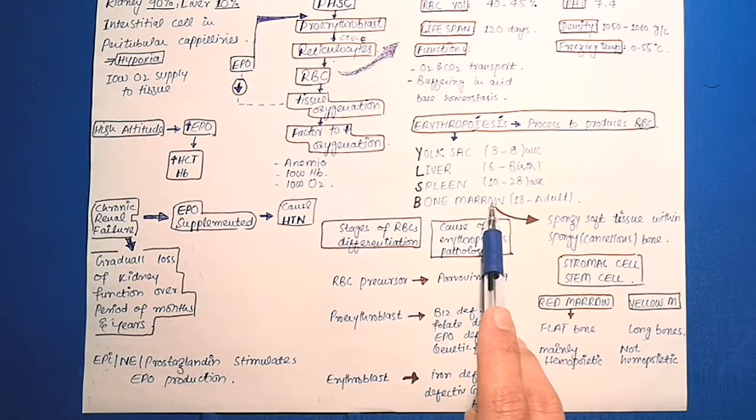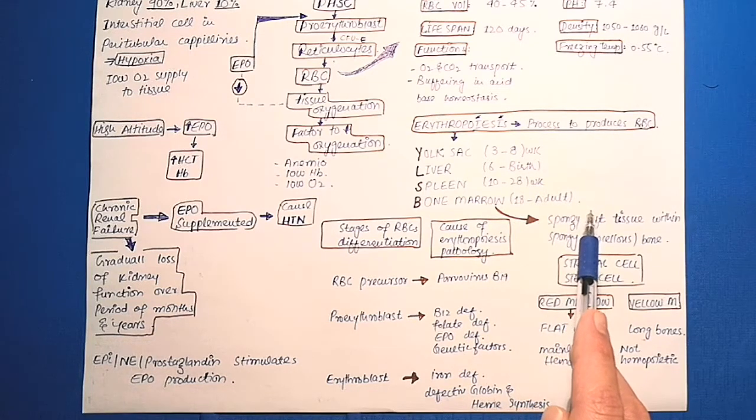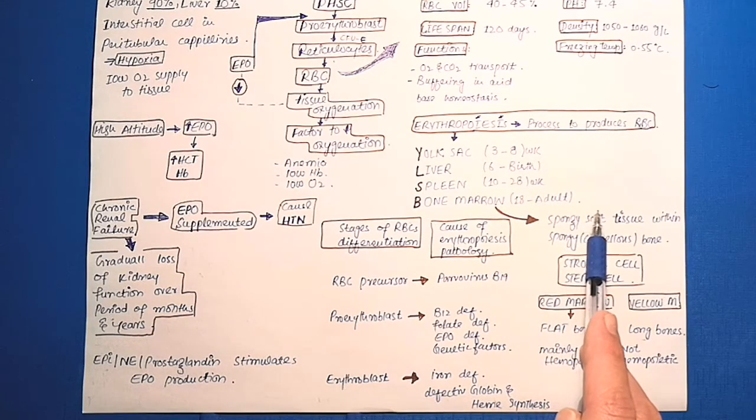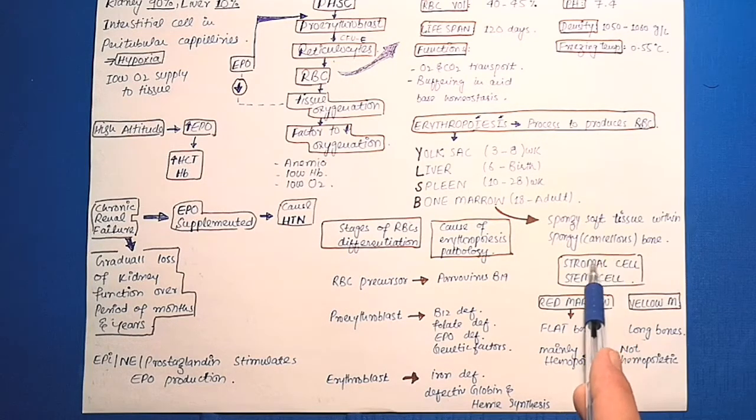Bone marrow is a soft, spongy tissue within spongy cancellous bone. The bone marrow is composed of stromal cells and stem cells. The stromal cells do not participate, but they play a critical role in maintaining and regulating the process.